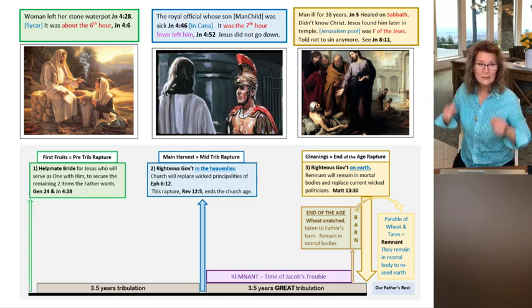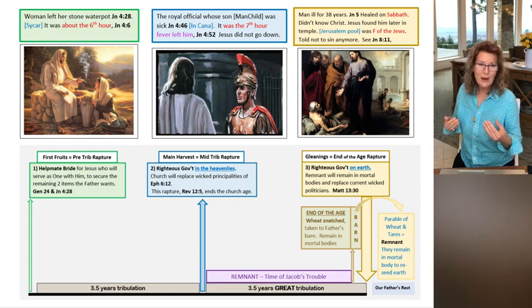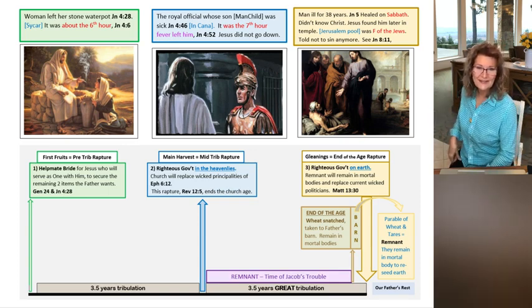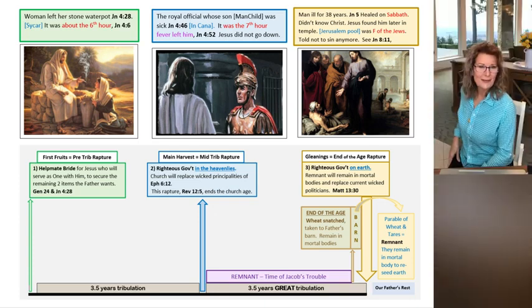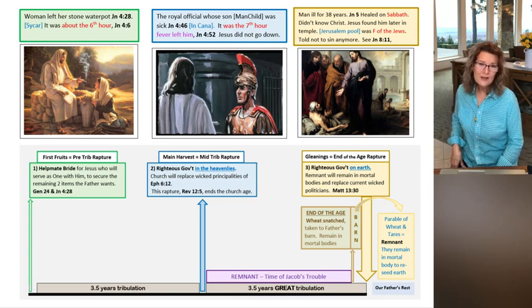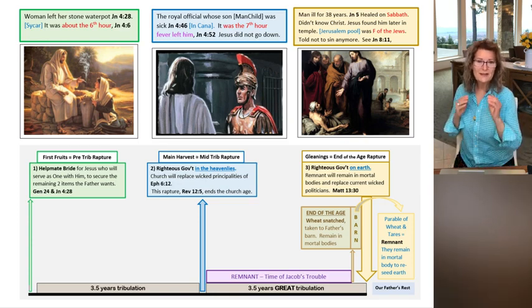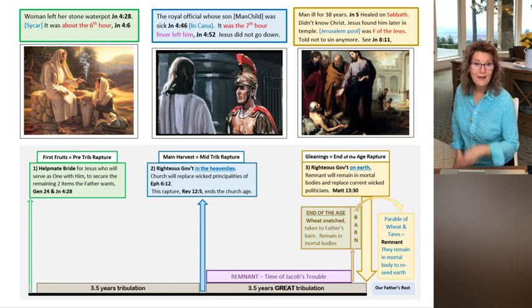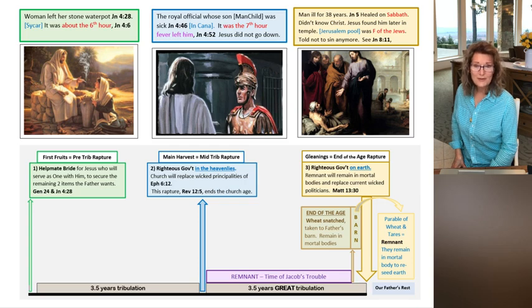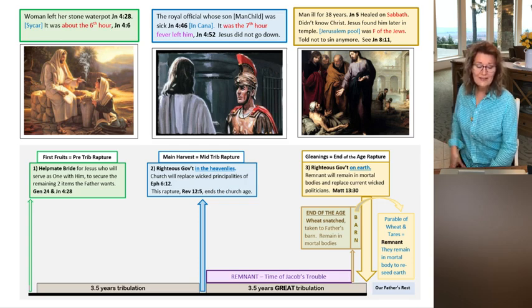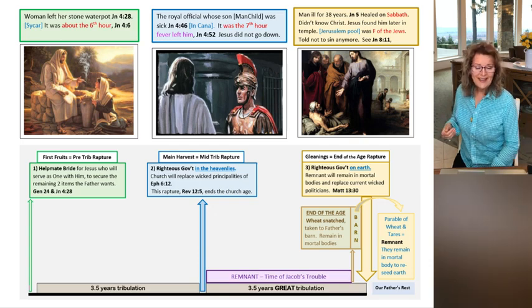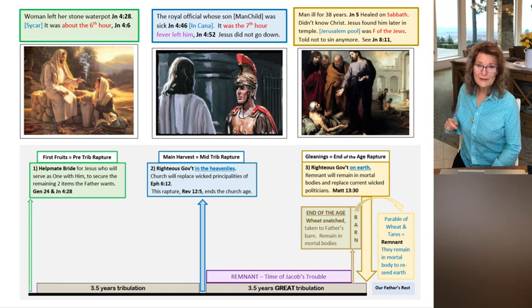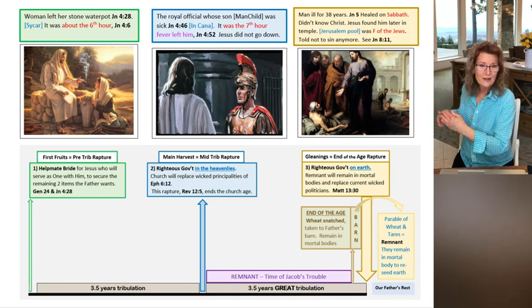That's why they remain in their mortal bodies. The bride and church, when raptured, get a glorified body because you need a glorified body to live in heaven. But you need a mortal human body to live on earth. Let's get back to the 38 years. The generation that didn't believe Joshua and Caleb—God pronounced judgment on them. For 40 years they would wander in the wilderness, and that generation would not go in, but their children would.